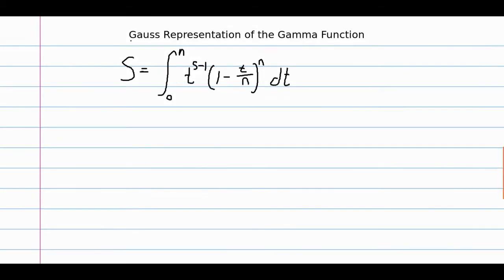Hello everybody. In this video we're going to be looking at the Gauss representation of the gamma function, which is basically representing the gamma function as an infinite product.